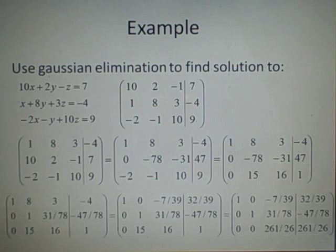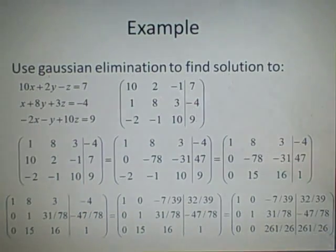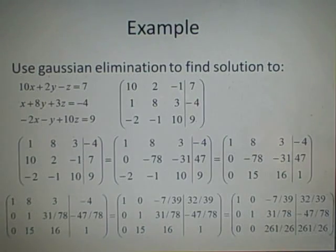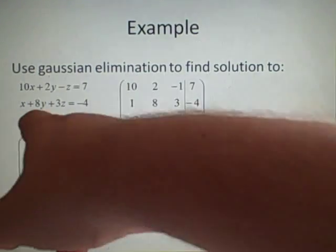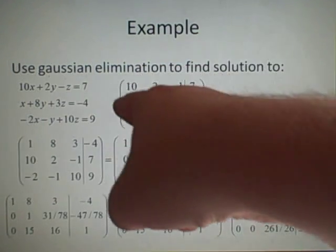Now I've got an example. They're very long. We want to use Gaussian elimination to solve 10x plus 2y minus z equals 7, x plus 8y plus 3z equals minus 4, minus 2x minus y plus 10z equals 9, and like we have before, we put it in the form of this table here.